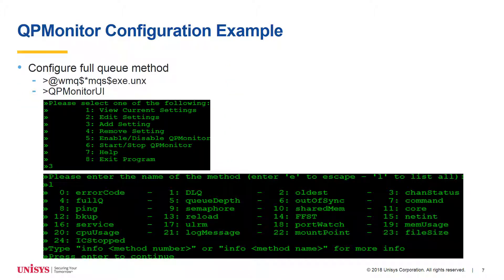The QP Monitor UI command to configure the QP Monitor displays a menu with options 1 through 8. Option 1, View Current Settings, displays a list of all configured methods. Option 2, Edit Settings, displays all configured methods and allows editing. Option 3, Add Settings, allows adding new methods. Within Add Settings, the L command lists all possible methods, and 'info method number' or 'info method name' provides a detailed description of each method. Option 4, Remove Settings, removes a configured method.